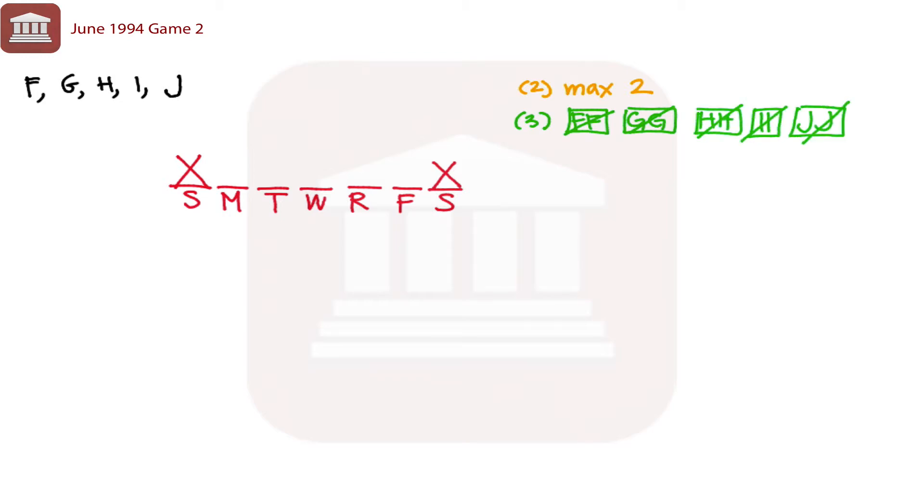Rule number four, F never works later in the week than J. So if F works, then F is going to be before J. So we know the contrapositive, if F is not before J, then F doesn't work.